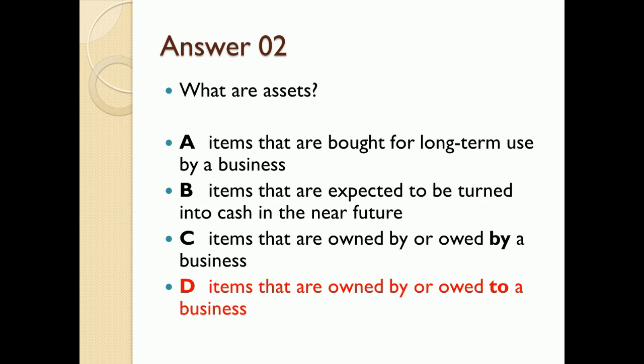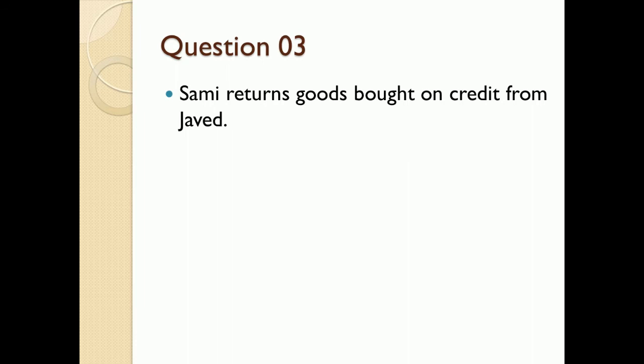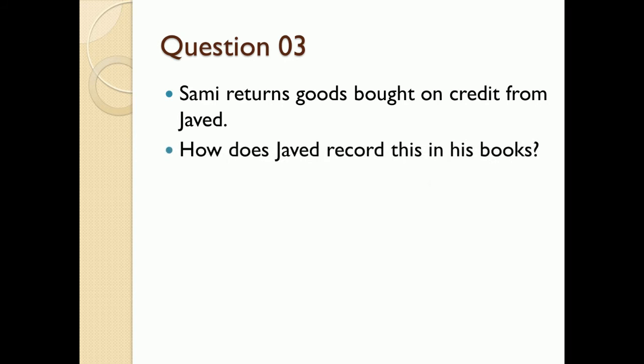Question number three: S returns goods bought on credit from J. This is a purchase return for S, since S is returning goods back to J. J is the seller and is basically receiving a sales return. The question asks how J records this in his books. Whenever you are directed to record a transaction in a particular trader's books, you should consider yourself as that trader.